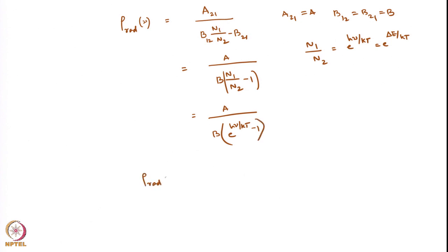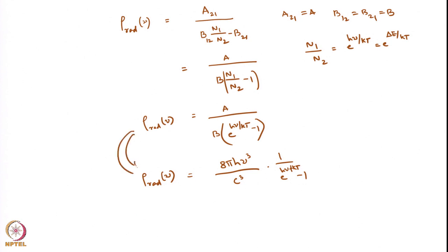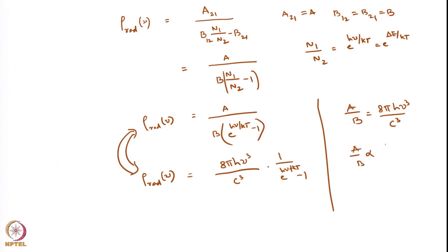Now, rho(nu) in terms of Planck's blackbody radiation gives A/B * (e^(hν/kT) - 1). If I equate these two equations, I can get A/B. Equating, I find A/B equals 8πhν³/c³, and we also discussed that A/B is proportional to ν³.